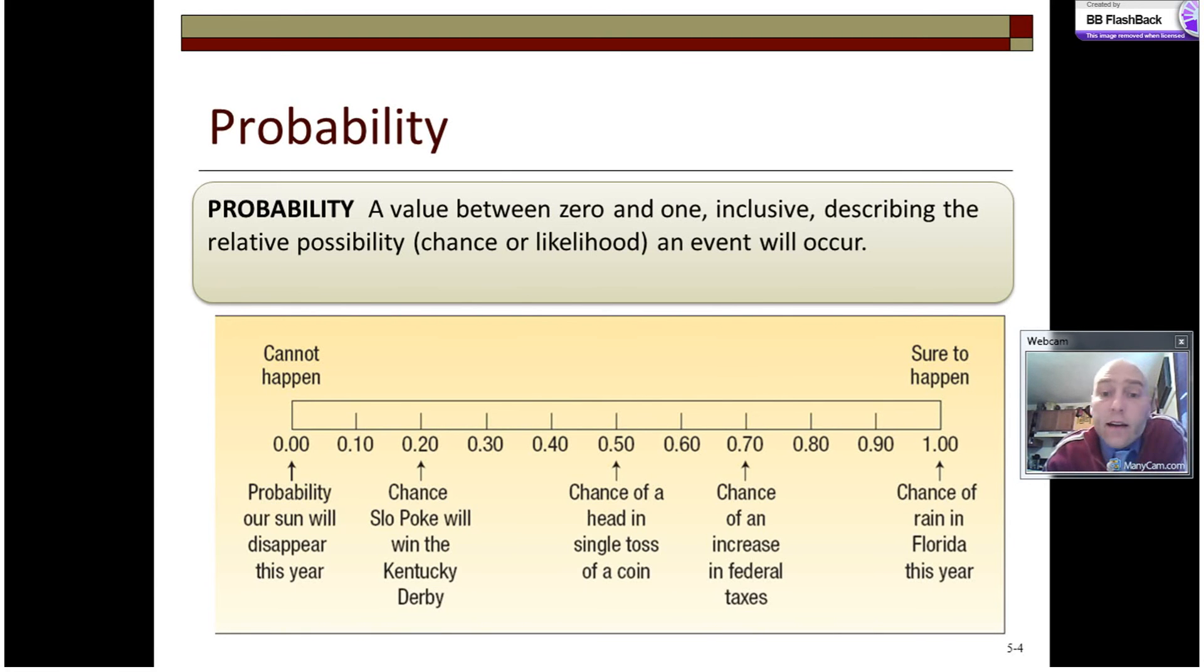Any number in between there can talk about the relative likelihood of things happening. The likelihood of a horse winning the Kentucky Derby. The likelihood of getting a single toss of a coin. This is, we know, 50-50 or one half or 50%. As we can see right here expressed as a decimal, it's 0.5.